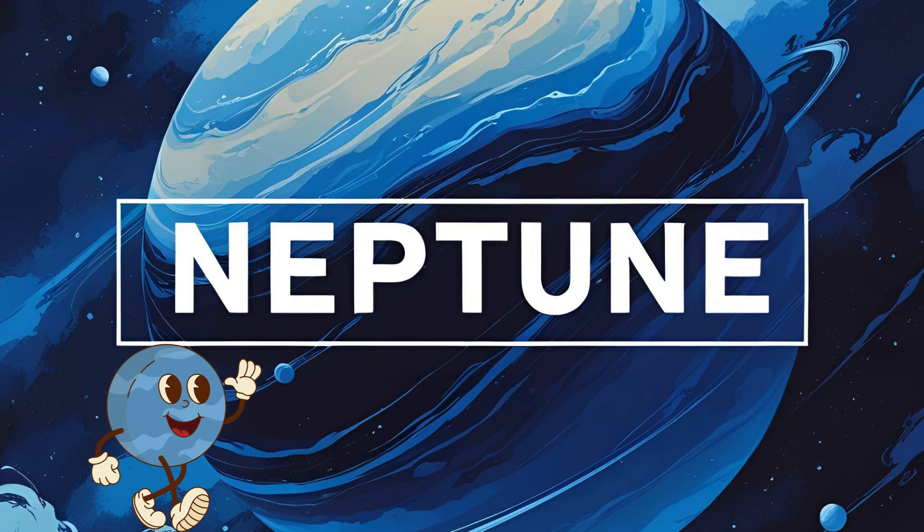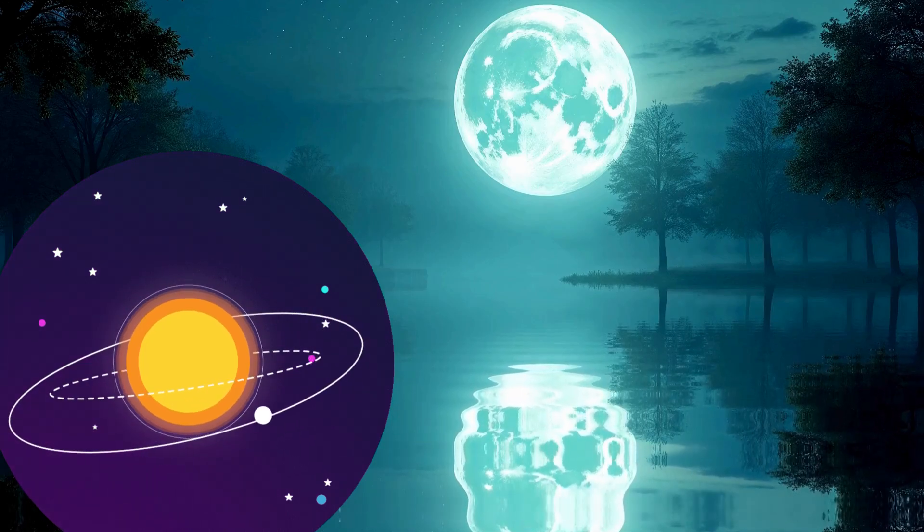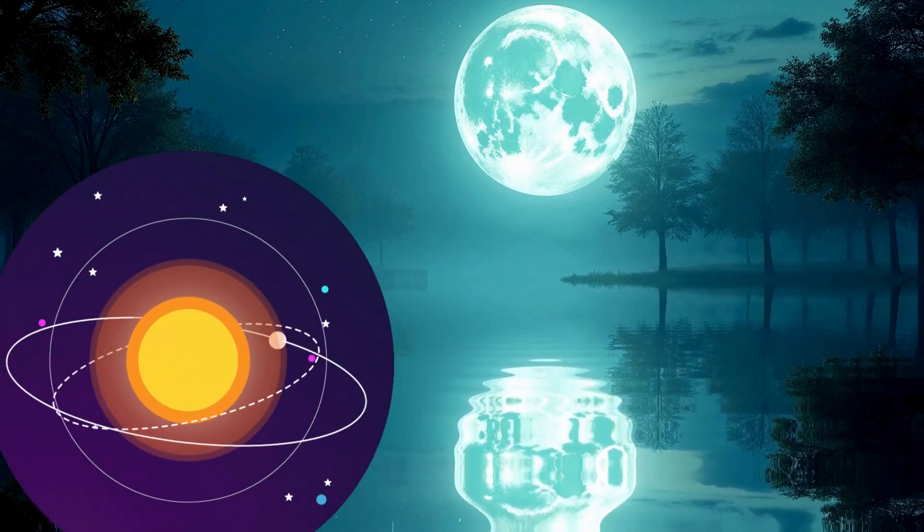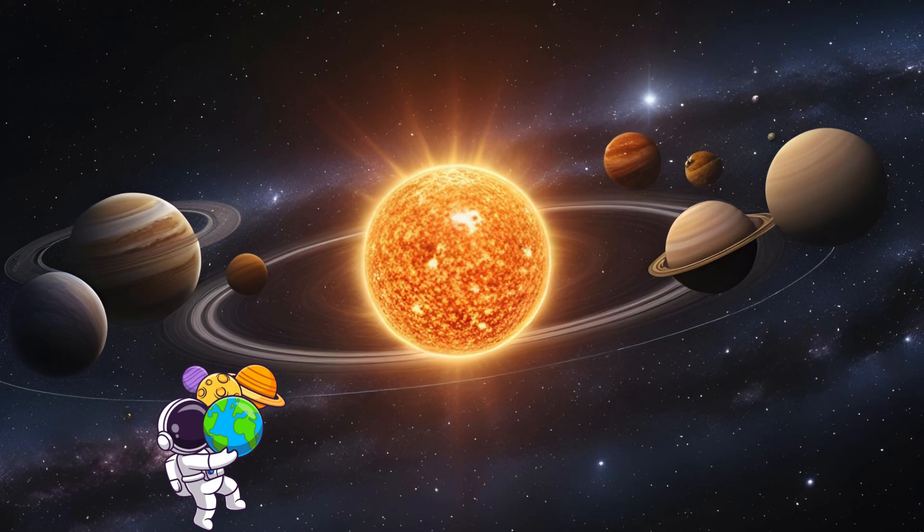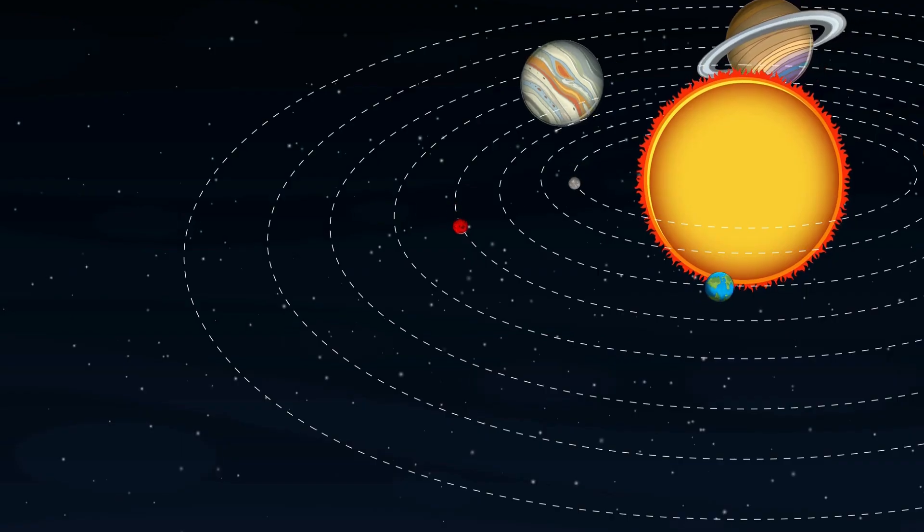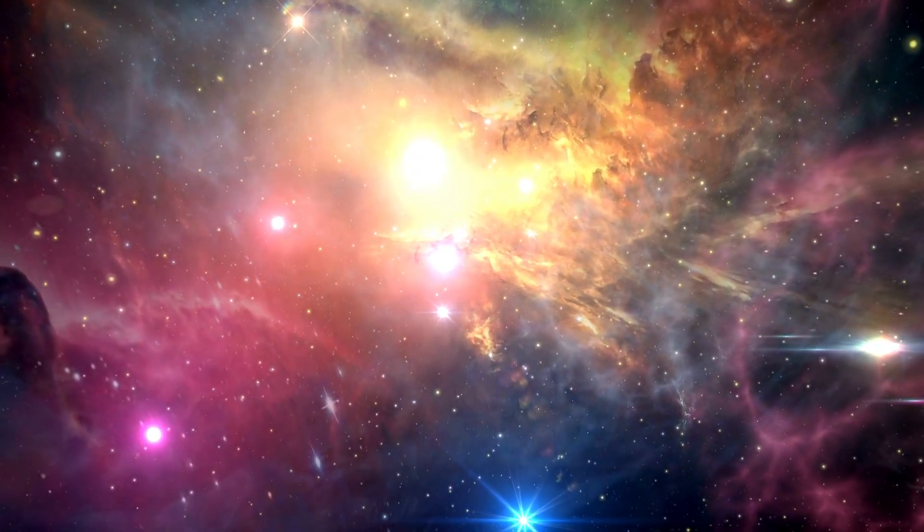There are also smaller worlds called dwarf planets, like Pluto, and many moons orbiting around the planets. All these planets, moons, and the sun together make our solar system, a tiny part of the Milky Way galaxy, which itself is just one galaxy among billions in the universe.